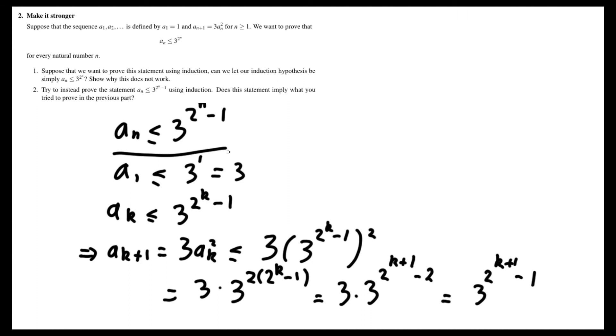So we can see that by induction, aₙ is less than or equal to 3 to the 2ⁿ⁻¹. And that's obviously less than or equal to 3 to the 2ⁿ. So we've managed to prove the original statement using a stronger inductive statement.